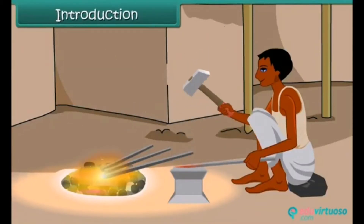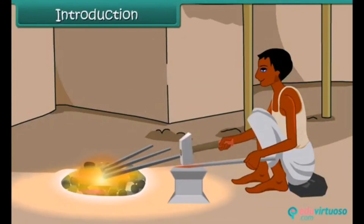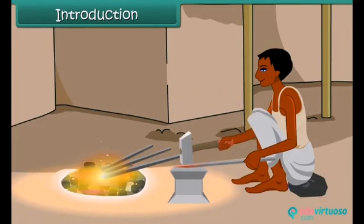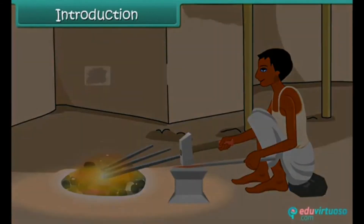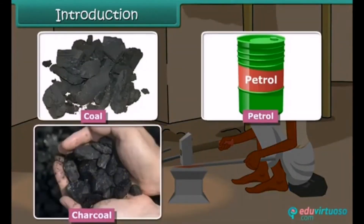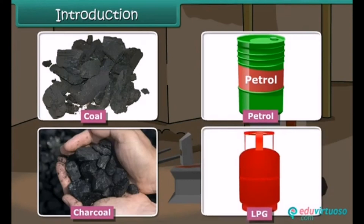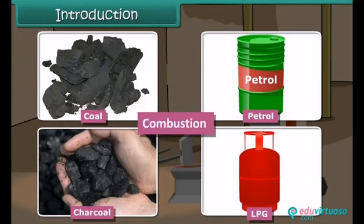The blacksmith burns coal to get hot iron, which can be beaten to a desired shape. A variety of fuels is used in daily life, such as coal, petrol, charcoal, LPG, etc. Do you know which chemical process is taking place during the burning of these fuels? It is combustion. In this lesson you will learn about combustion of fuels.